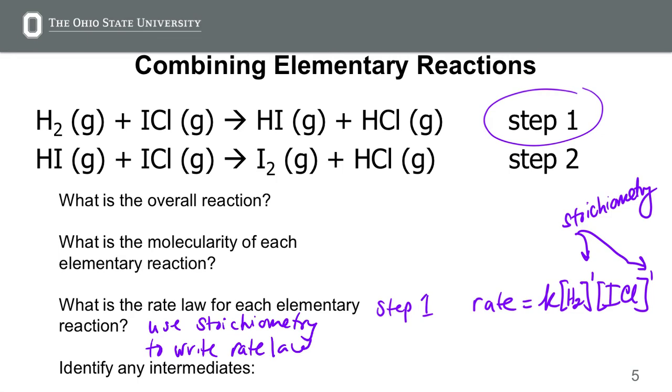For these two reactions, is there an intermediate and what is it? HI. HI is formed as a product in one side, used up as a reactant in the other, so it has to be an intermediate. Make sense?